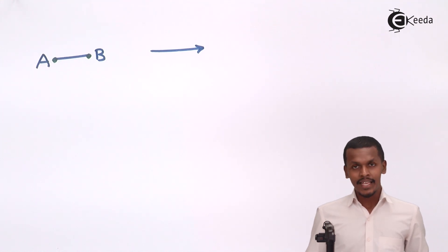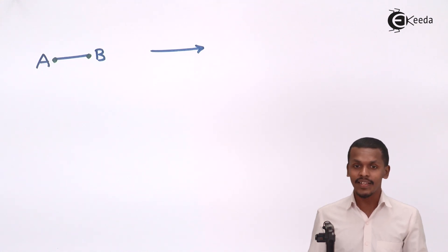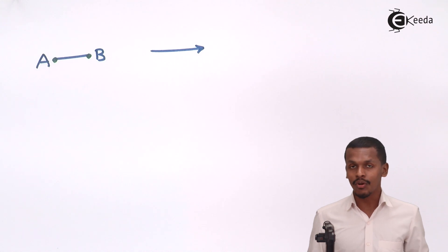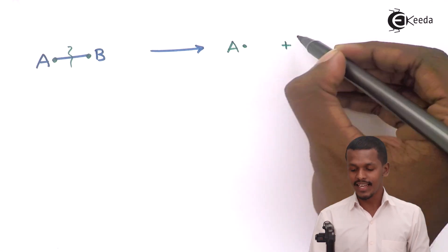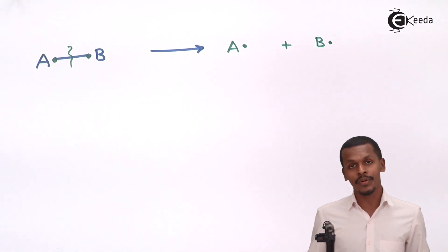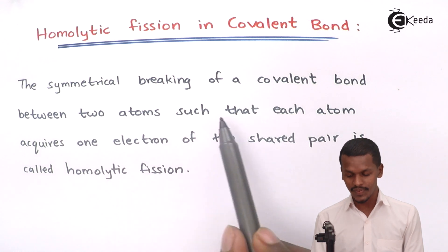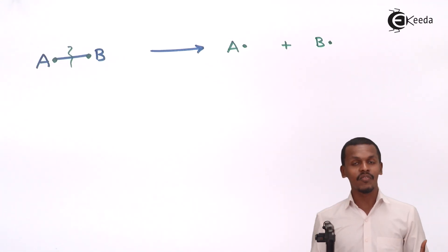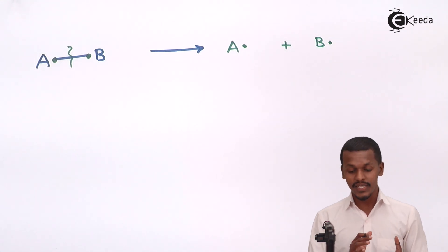When this A–B bond breaks under homolytic fission, it breaks in such a manner that each atom gets its own electron — atom A acquires one electron and atom B acquires the other. This is a symmetrical breaking: each atom acquires one electron of the shared pair, consistent with the definition.